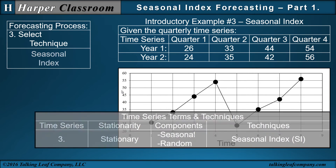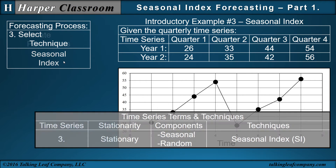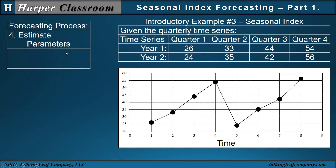Next, select the technique. Here's where the table comes in: we have a stationary time series with a seasonal and random component, and the technique of preference is seasonal index. Then we estimate our parameters. The parameter for seasonal index is the seasonal indexes, but we will not estimate seasonal indexes in this video — in part one. We will do that in part two.